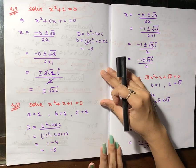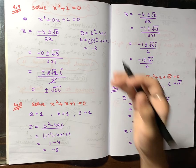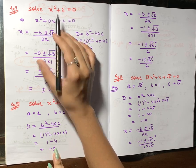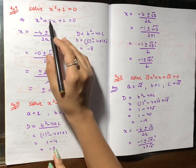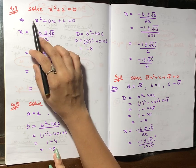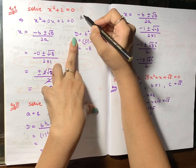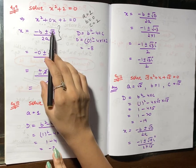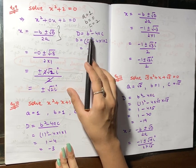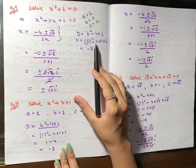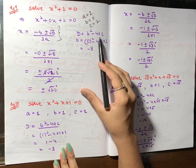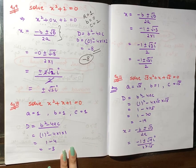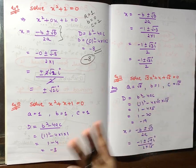Moving on to examples. Example 9: solve x² + 2 = 0. Here x² is present but x is not, so I write it as x² + 0x + 2 = 0. So a = 1, b = 0, c = 2. First we find D: D = b² − 4ac = 0² − 4(1)(2) = 0 − 8 = −8.